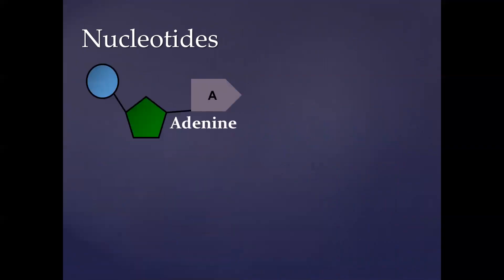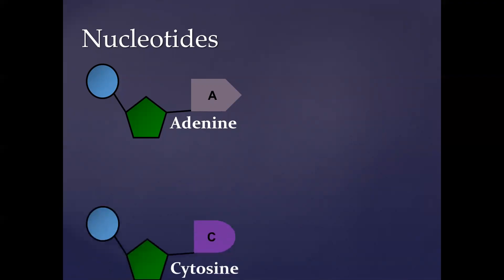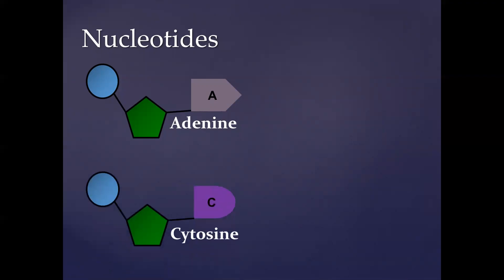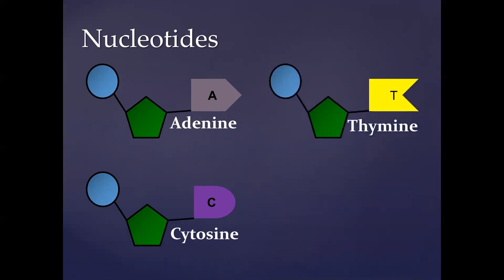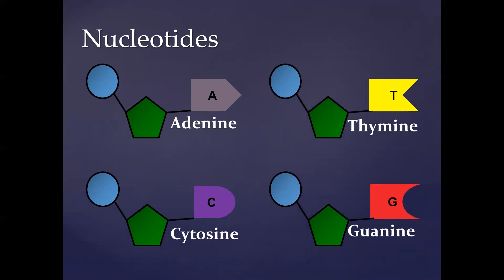The four nitrogenous bases making up the four different types of nucleotides are: adenine, cytosine, thymine, and guanine. Those are the four different types of nucleotides we get within DNA. There is a slight difference when it comes to RNA, but we'll mention that when we get to that section.